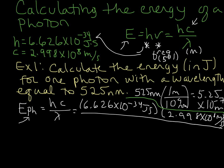All of that is going to be divided by 5.25 times 10 to the negative 7 meters. So that's the wavelength of our photon converted to meters.